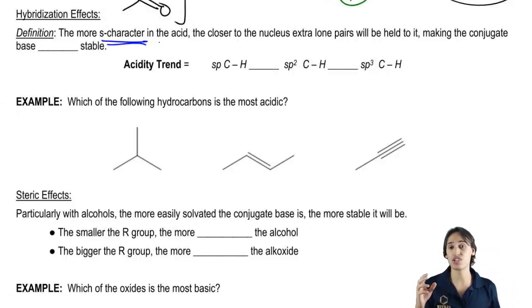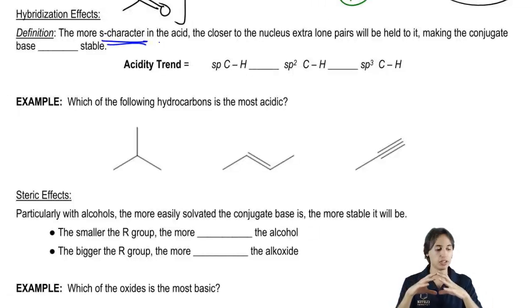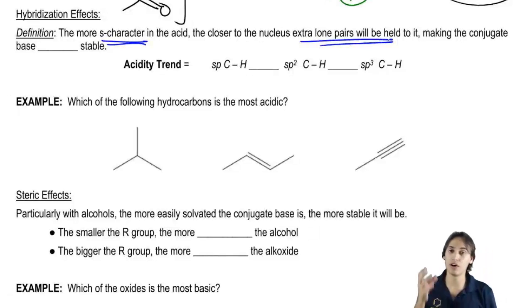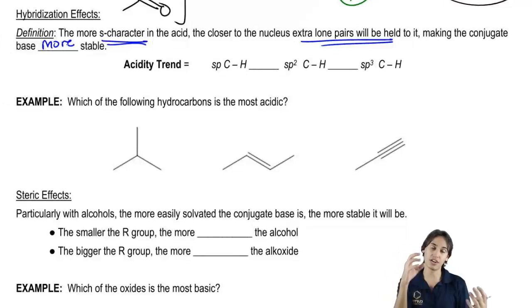The reason is because the S orbital is the one that's closest to the nucleus. Remember it's the smallest, so the more S character you have, the closer the lone pairs are going to be held to the nucleus and it's going to make the conjugate base more stable because you're going to hold those electrons tighter to the positive and it's going to be a little bit more stable.